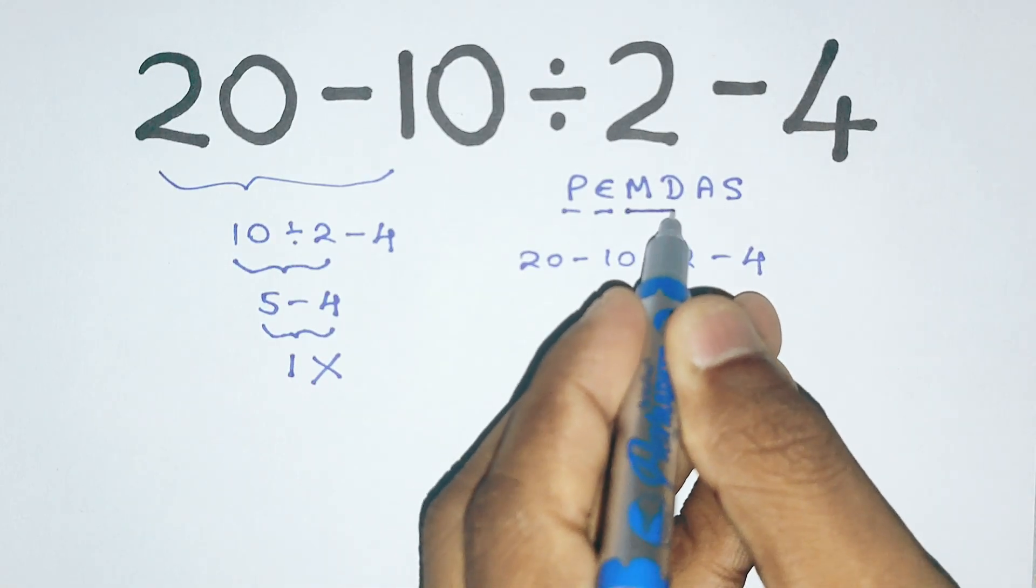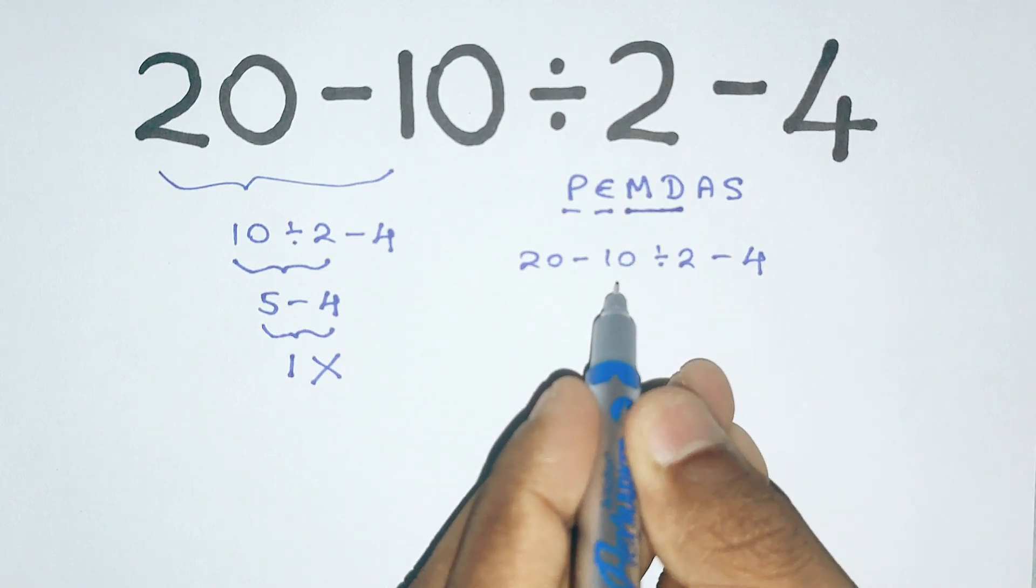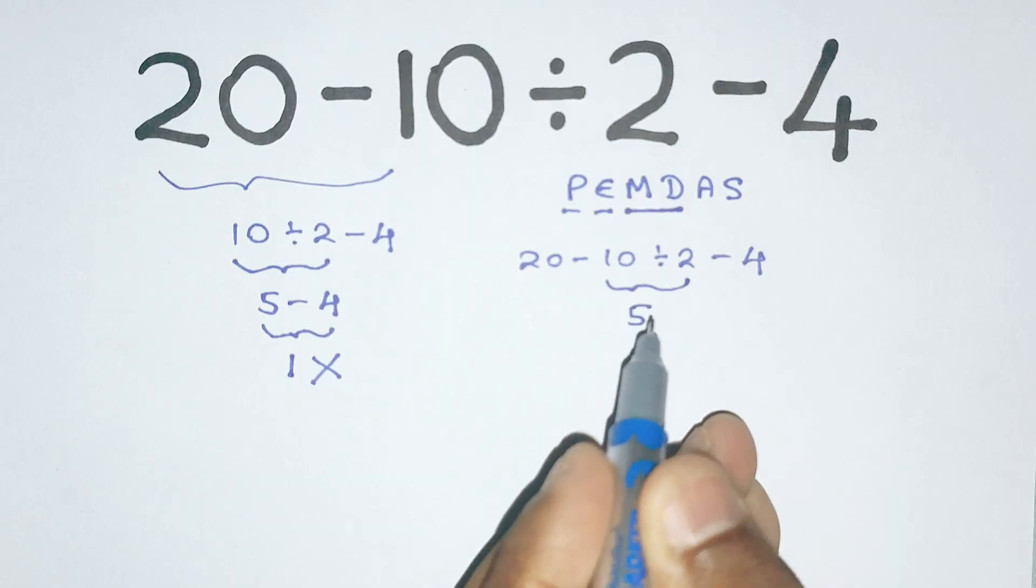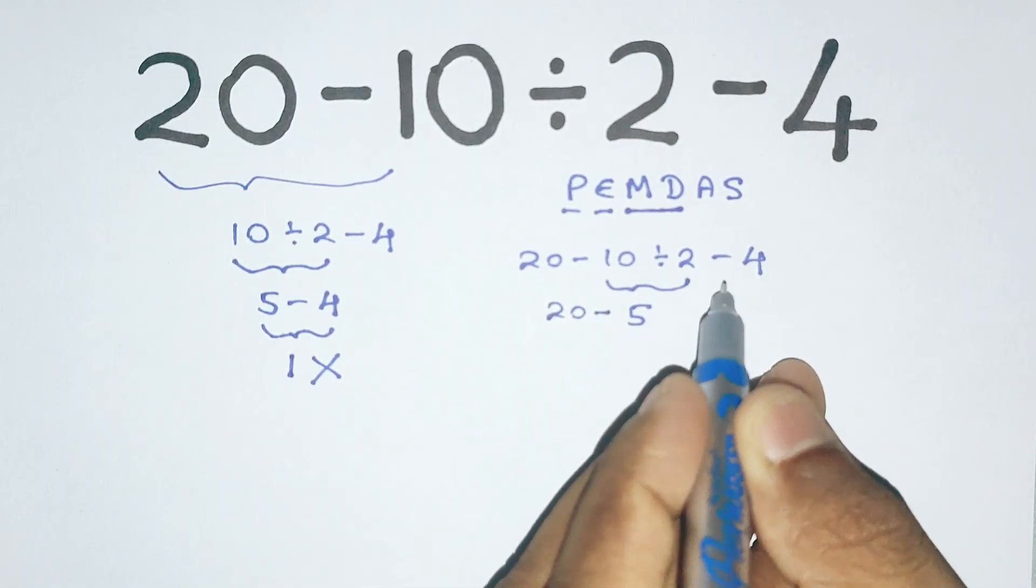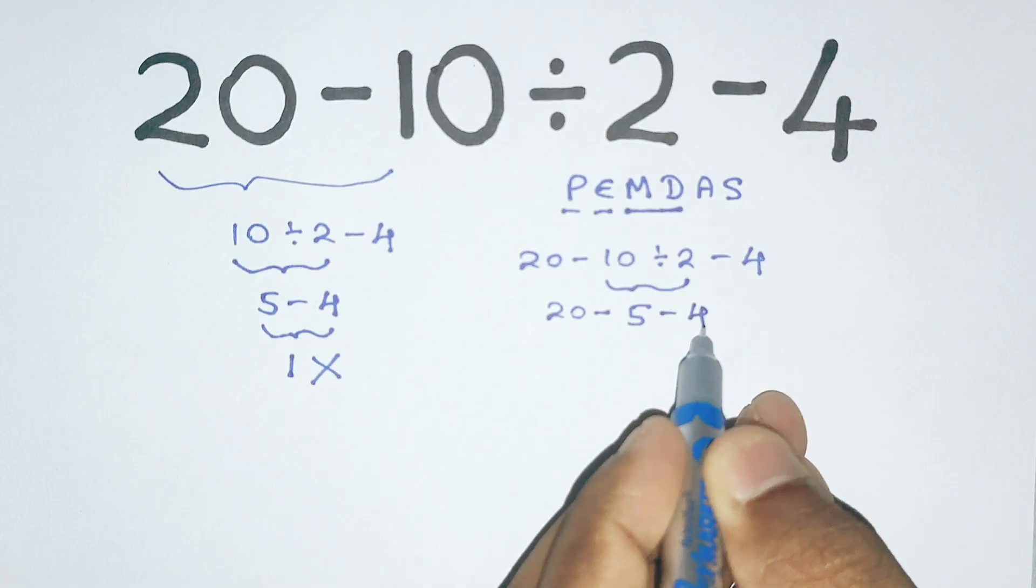After that comes multiplication and division. And yes, we do have a division here. 10 divided by 2 which equals 5. Now the expression becomes 20 minus 5 minus 4.